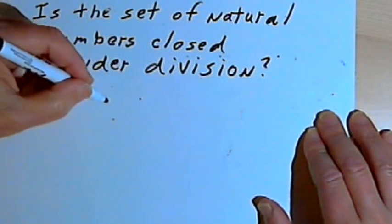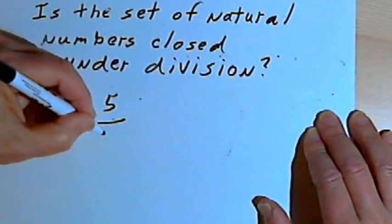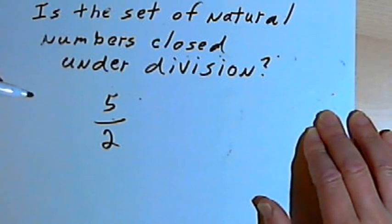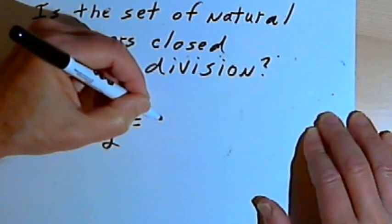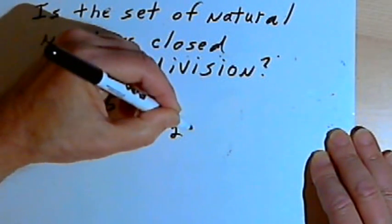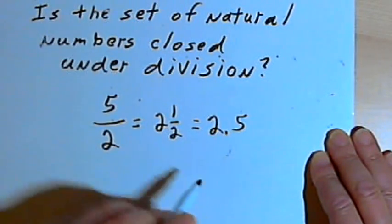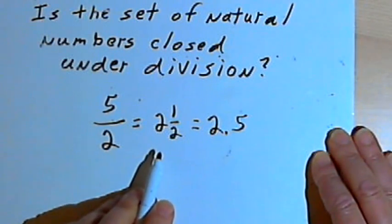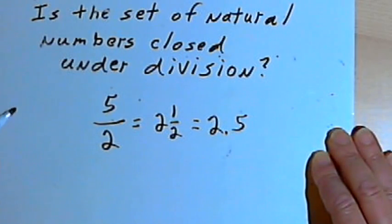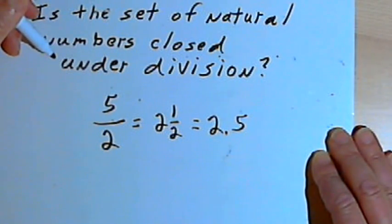So let's say that I'm taking 5 and dividing it by 2. When I take 5 and divide it by 2, I could write the result as 2 and 1/2 or I could write it as 2.5. These are not natural numbers, so the set of natural numbers is not closed under division.